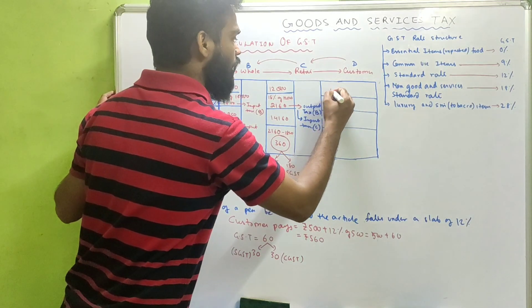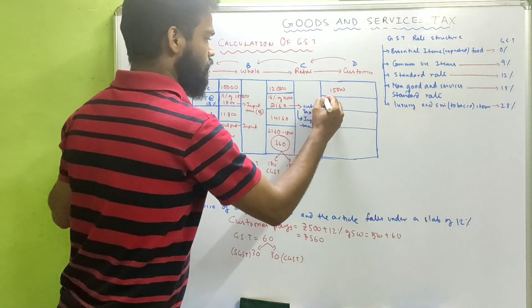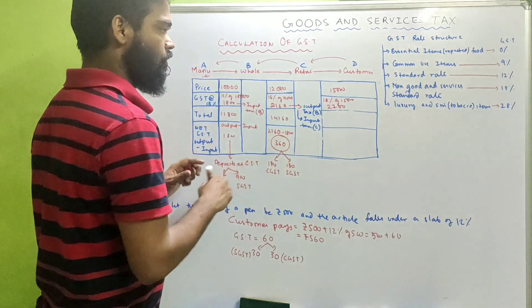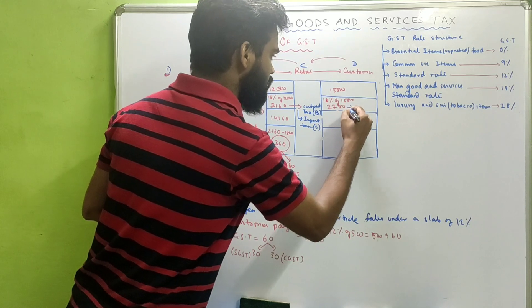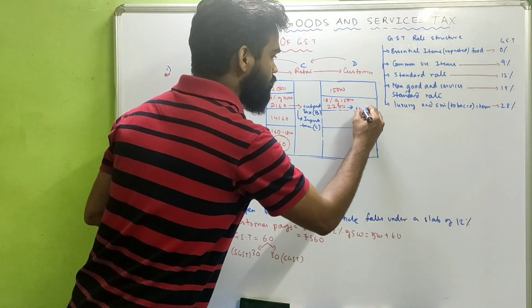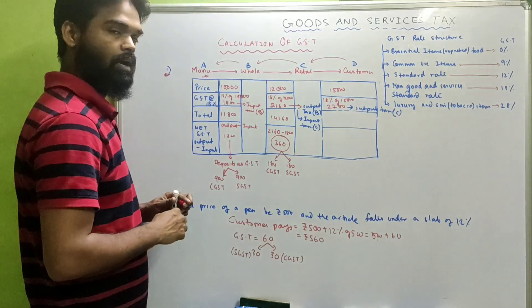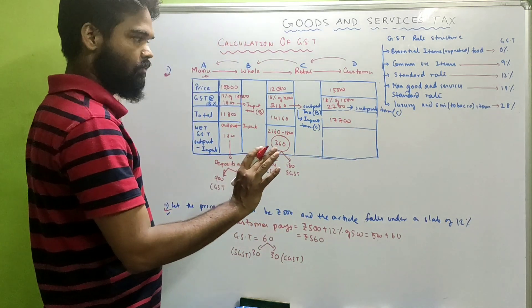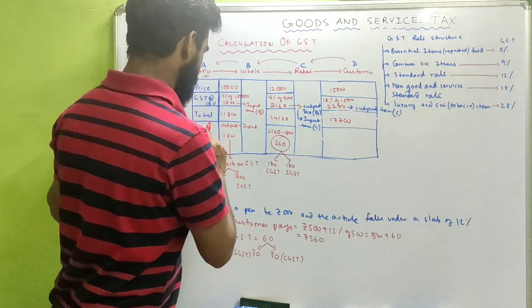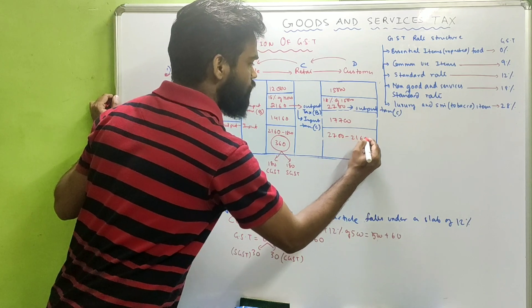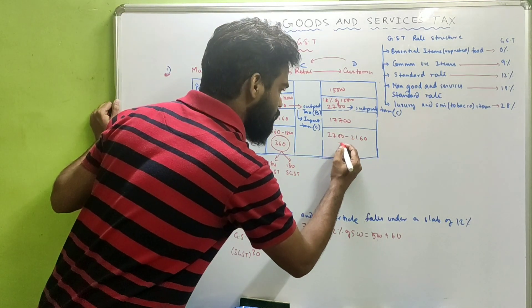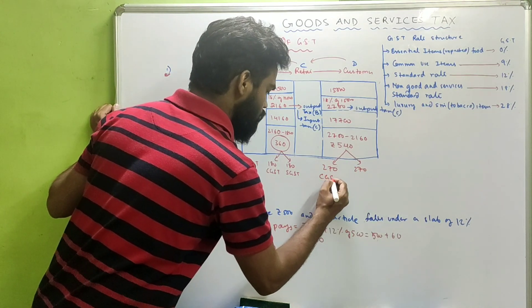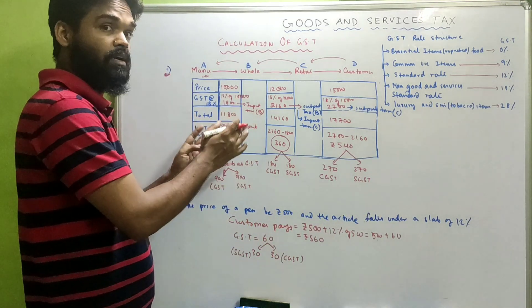The retailer sells the article to the consumer at ₹15,000. The customer pays 18% of ₹15,000, which is ₹2,700, making the total ₹17,700. The net GST the retailer pays is output minus input: ₹2,700 minus ₹2,160 equals ₹540. This ₹540 is deposited, again divided into two parts — one part as CGST and the other as SGST. This is for an intra-state sale; for interstate, the condition is different.